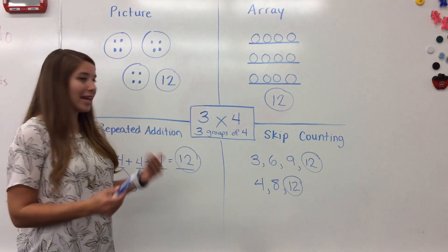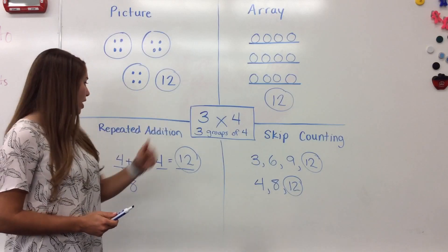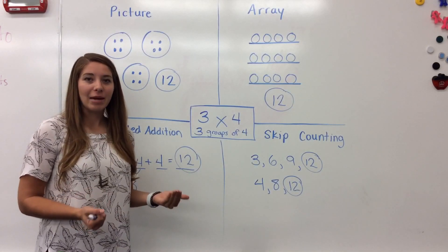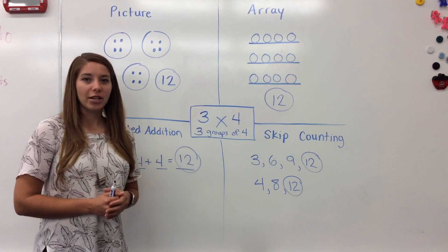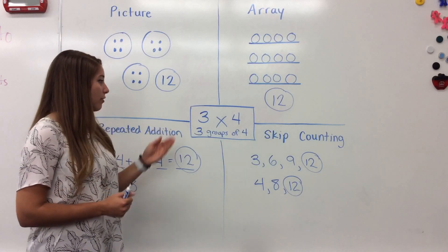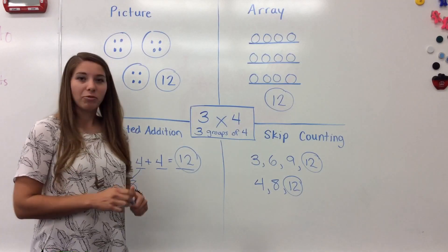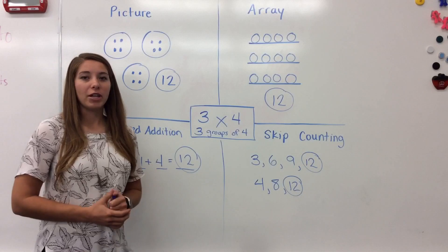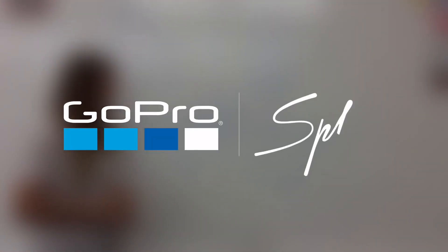If you notice, any of these strategies — whether it was a picture, an array, repeated addition, or skip counting — I get the same answer to the problem. So there you have it: those are the four strategies that we teach here at John F. Long when you are learning to multiply. If you thought this video was helpful, go ahead and like it. We're also going to be making a lot more videos to help you with your learning this year, so stay tuned. And until next time, keep learning, Longhorns.